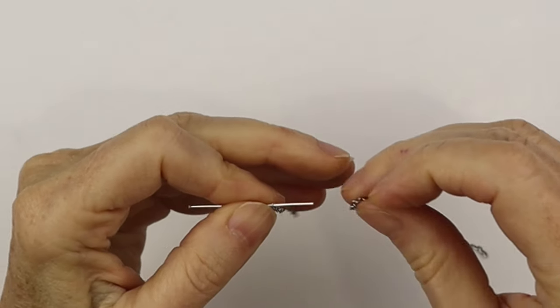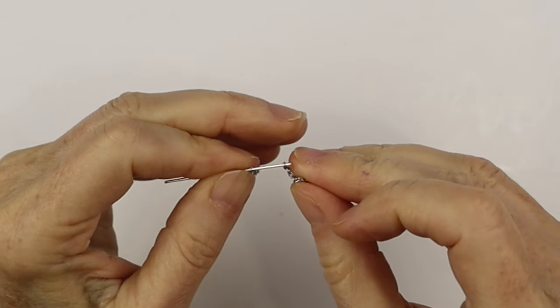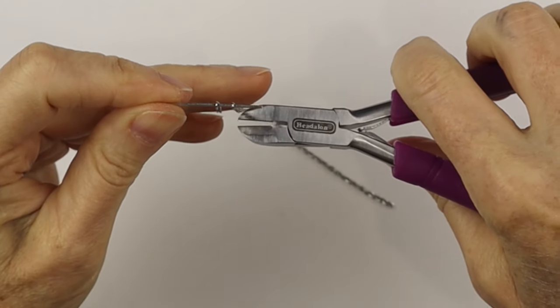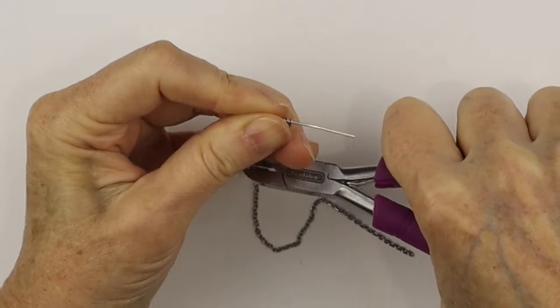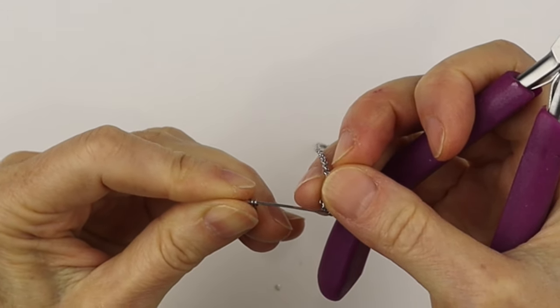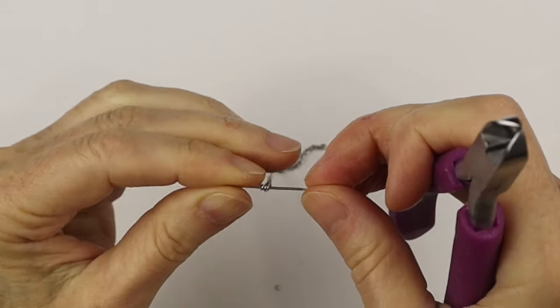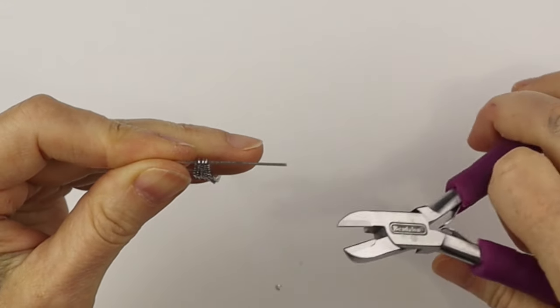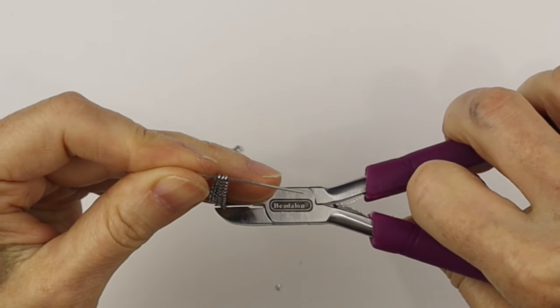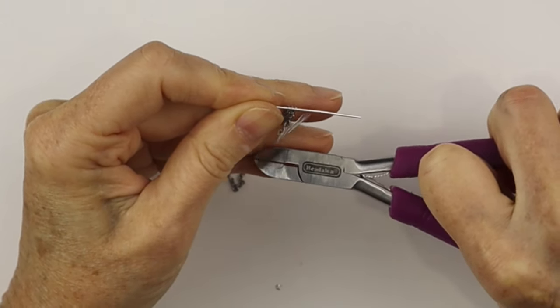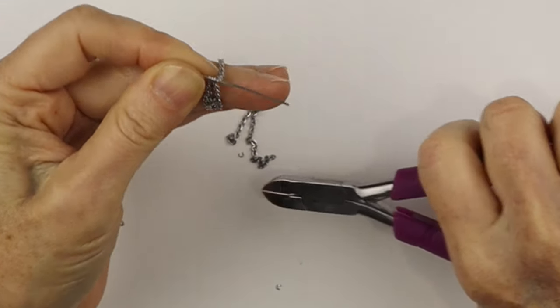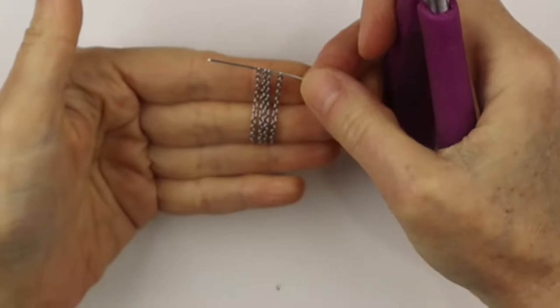And then now we're going to cut our chain. We're going to need four pieces that are the same size, so I'm just putting them on a wire so they're lined up. And we're going to clip four pieces. These can be any length you want. I'm doing about an inch and a half, just depends on how long you want your earrings to be. And we're just clipping four pieces of the stainless steel chain so they're all the same size.